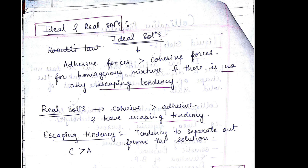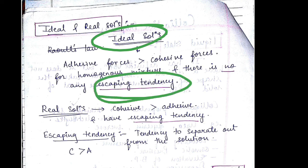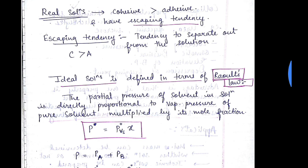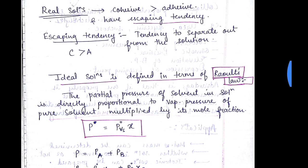Now we are going to see what are ideal solution and real solution. Ideal solutions are when the adhesive forces are greater than cohesive force. For homogenous mixture there should be no escaping tendency. In real solutions, cohesive forces are greater than adhesive forces and they have the escaping tendency.